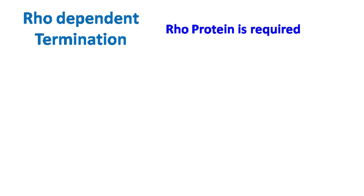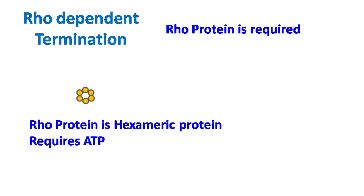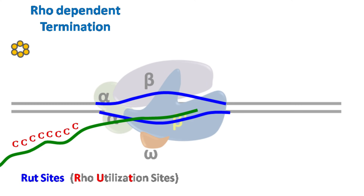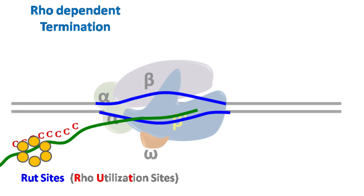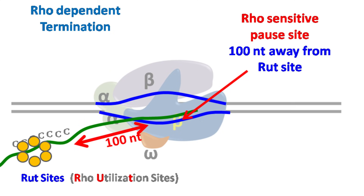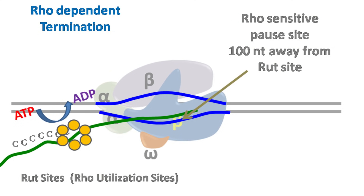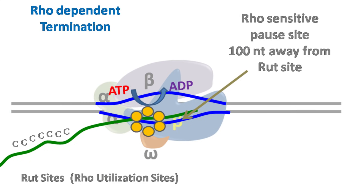Rho-dependent termination depends on the protein known as the rho factor. The rho factor is an ATP-dependent hexameric helicase. The rho protein binds the single-stranded RNA rich in cytosine. These cytosine residues are also known as the rho utilization site, or the rut site. When the RNA polymerase reaches 100 nucleotides away from the rut site, it stops the transcription. The sequence that halts the RNA polymerase is known as the rho-sensitive pause site. Once the rho protein binds the rut sequence in RNA, it uses the energy of ATP and translocates to the RNA-DNA hybrid and unwinds the region.